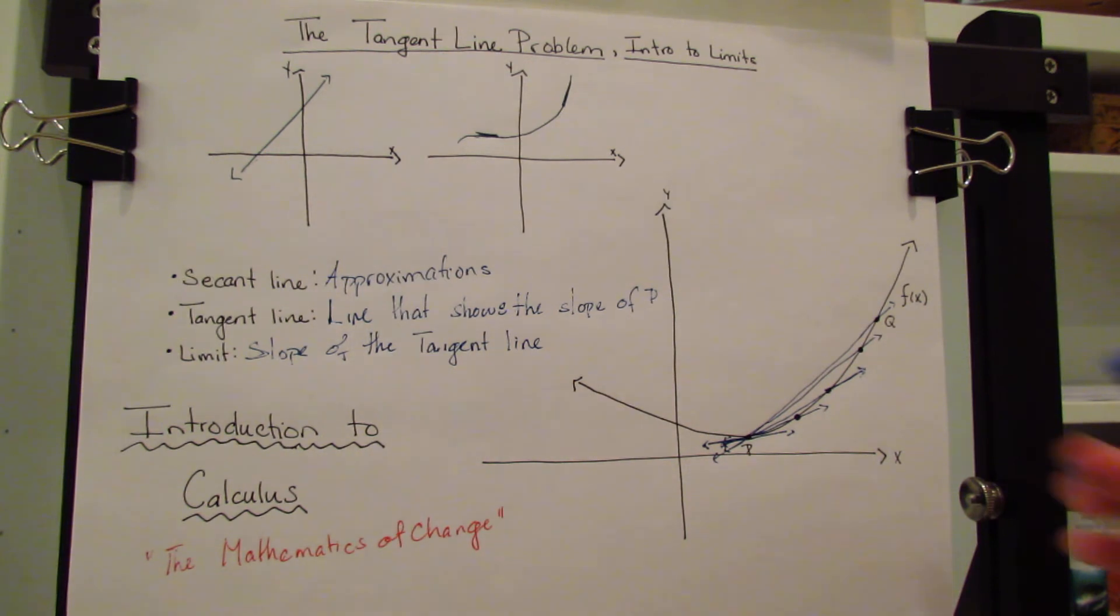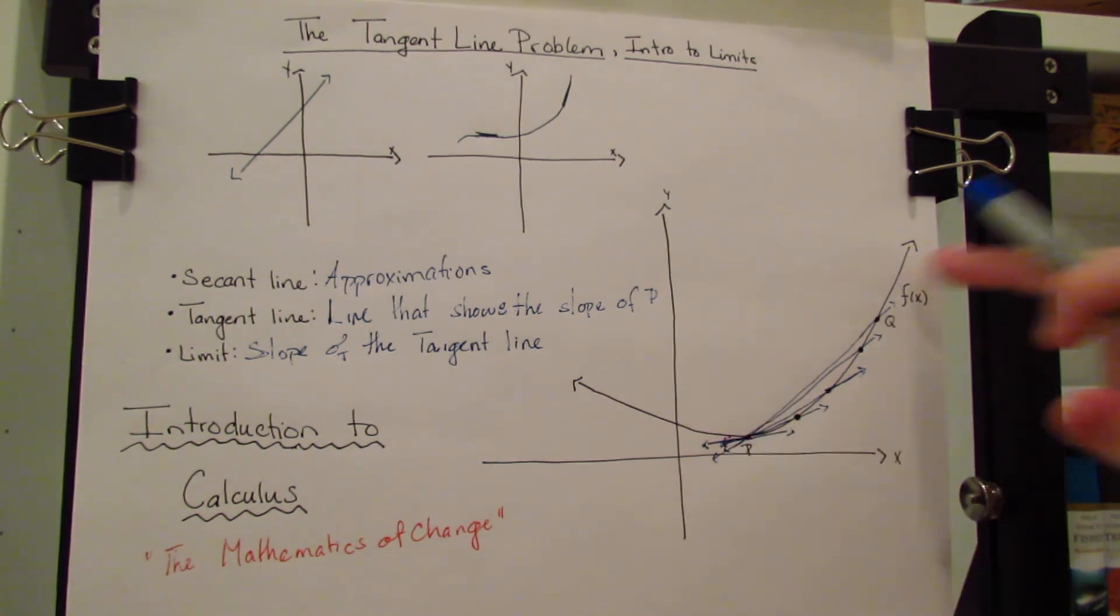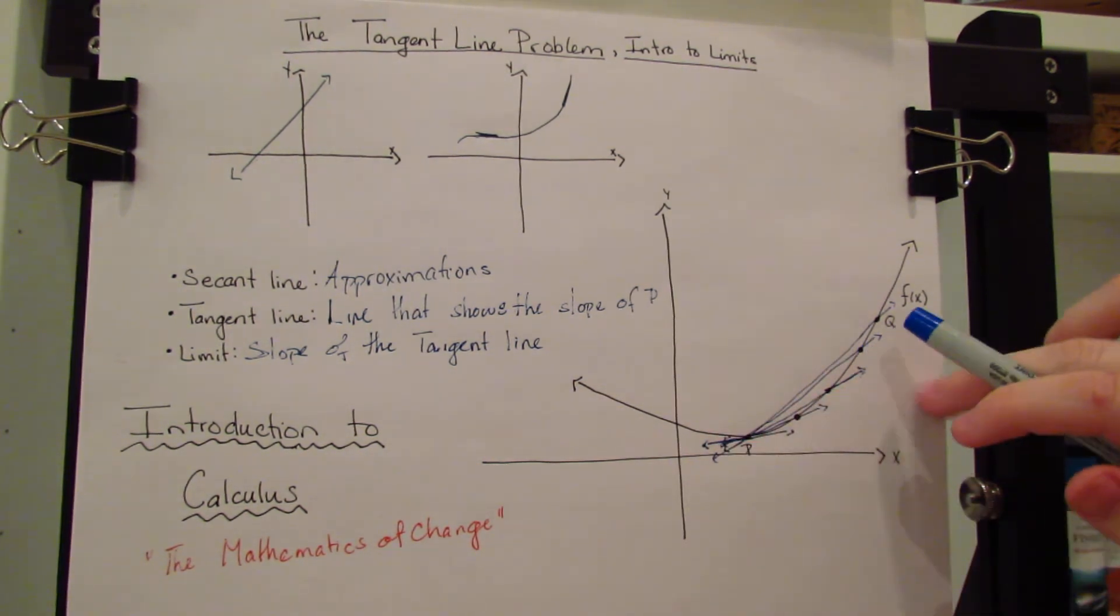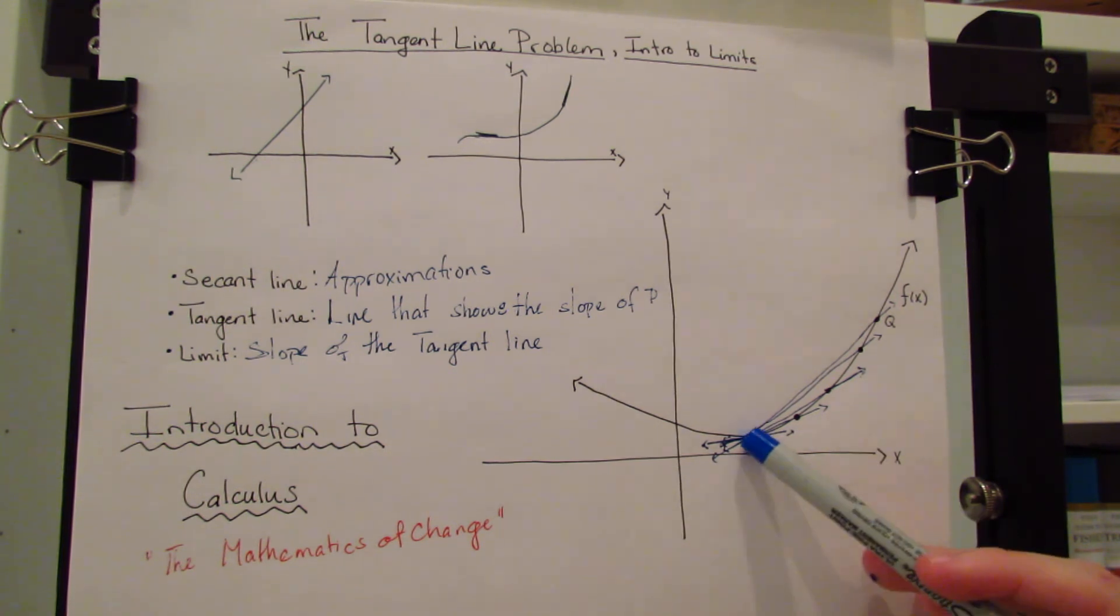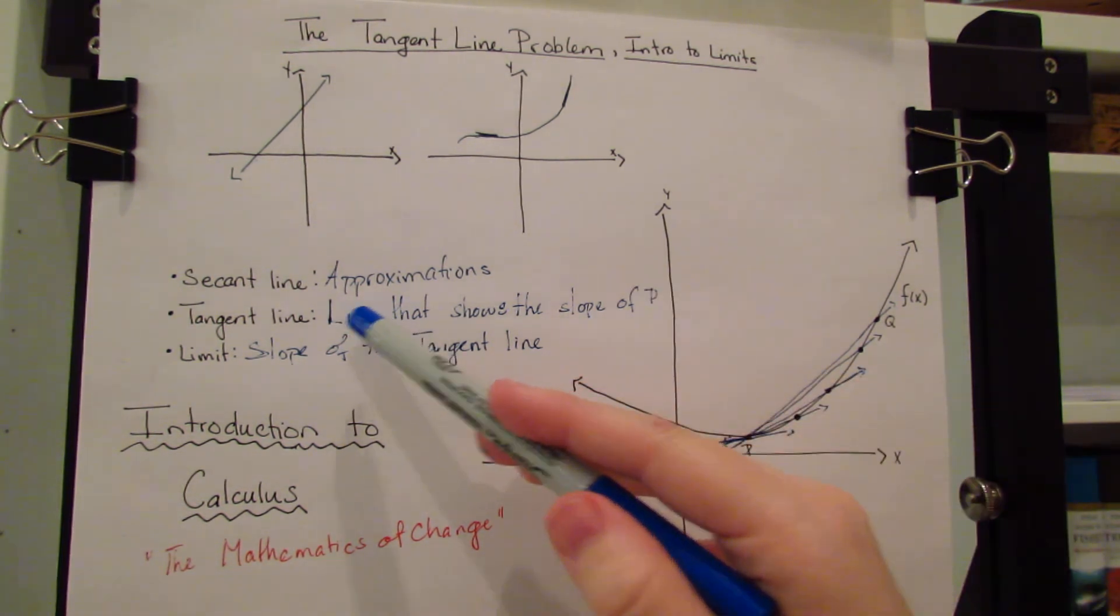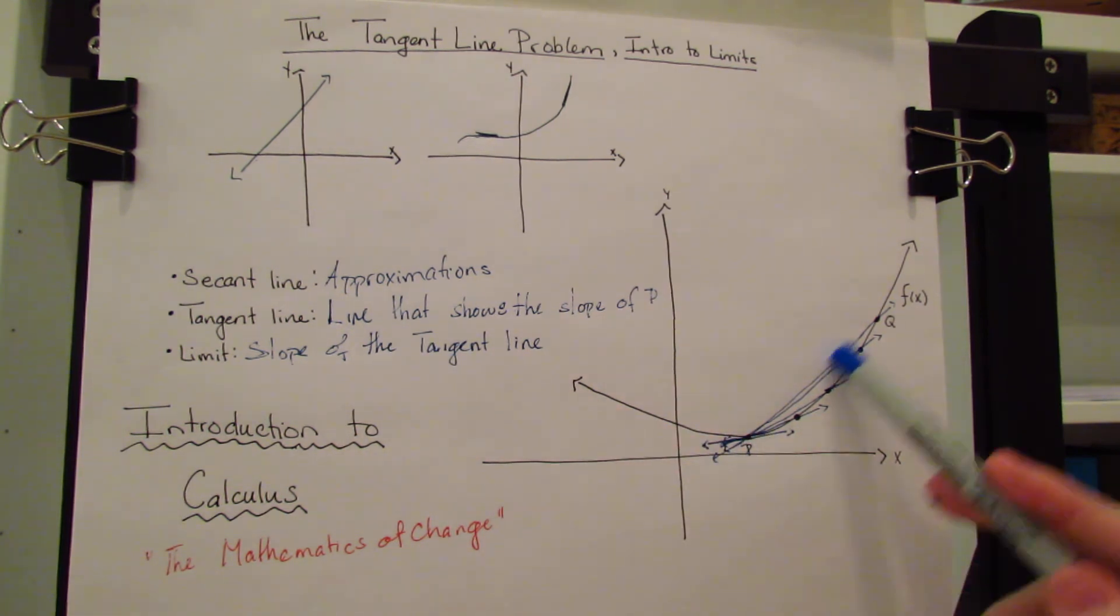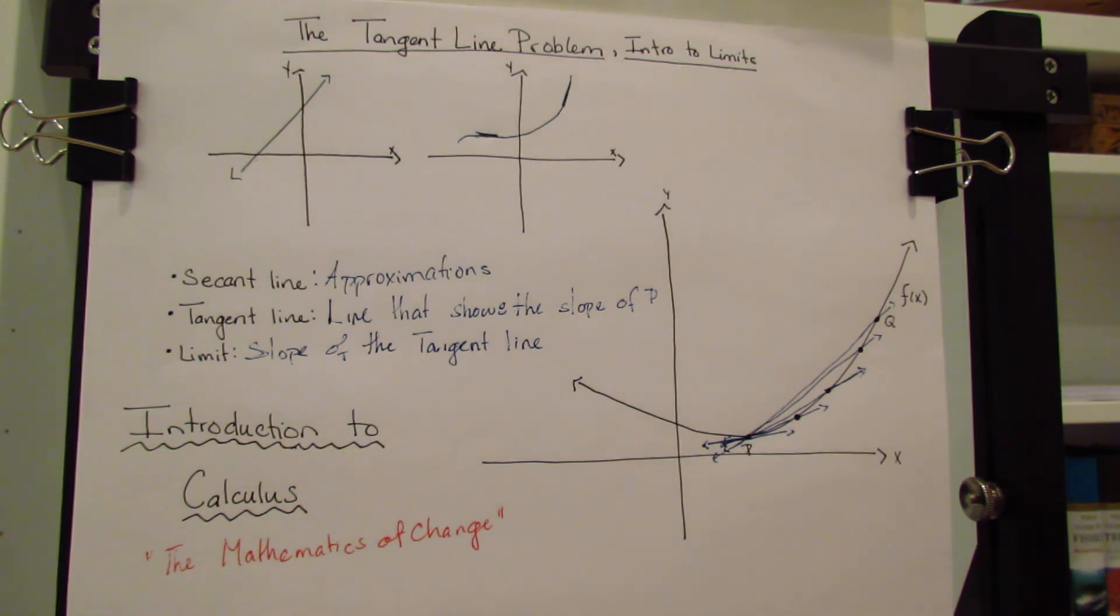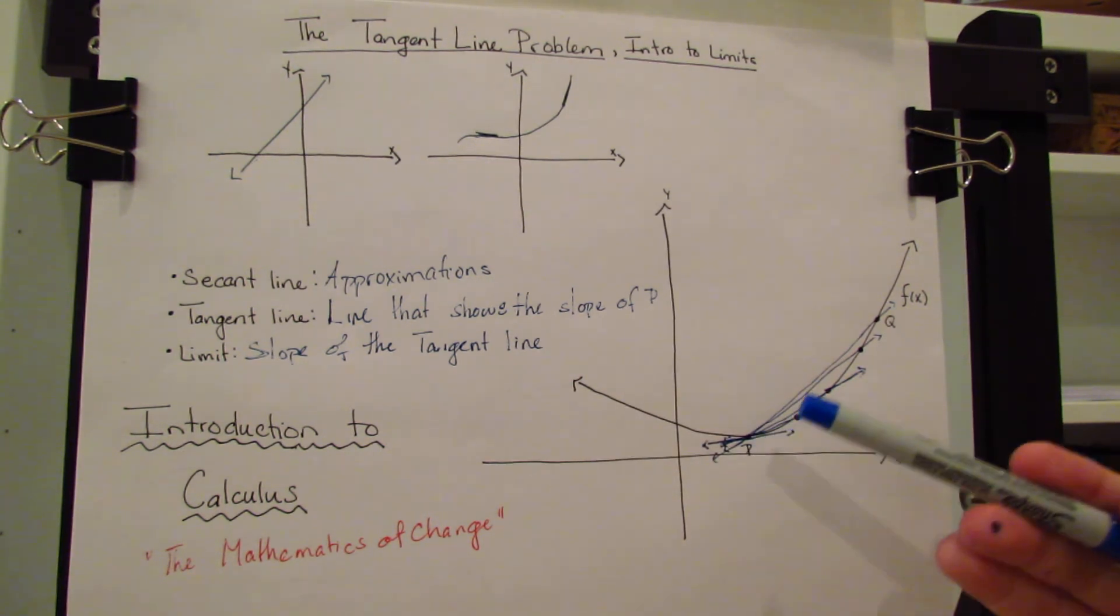So we have our three main terms: secant line, these are our approximations from P to Q, and as Q gets closer and closer to P. Our tangent line, which is when Q eventually gets to P and actually gives you a line that represents the slope. If you calculate the slope of the tangent line, you'll get the limit, which is also the slope at P.